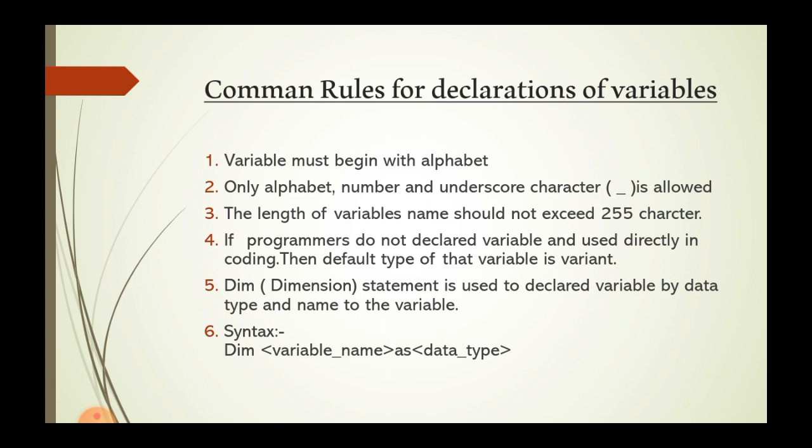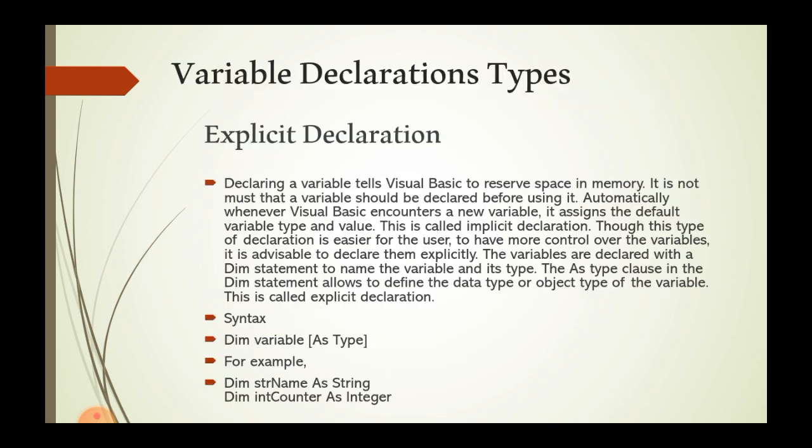The simple syntax is: Dim VariableName As DataType. Variables can be declared in two ways: explicit declaration and Option Explicit declaration in Visual Basic.